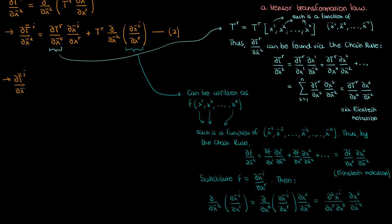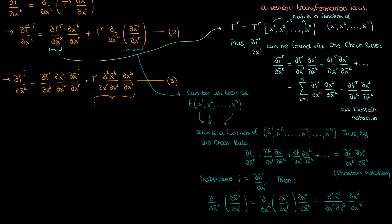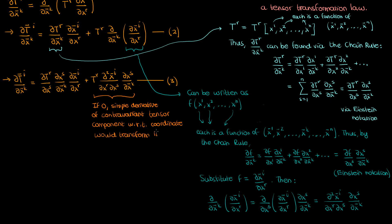Finally we'll plug all these expressions into our transformation law derivative, and ultimately I will end up with an equation I'm going to call equation 3. If I completely ignore this mixed partial derivative term on the right-hand side and set it to 0, then you can actually see that this partial derivative of a tensor component does transform like a tensor — in fact it ends up being the transformation law of a mixed tensor of contravariant rank 1 and covariant rank 1.